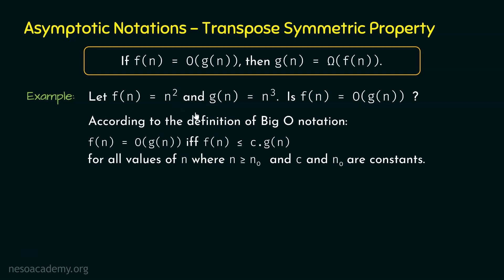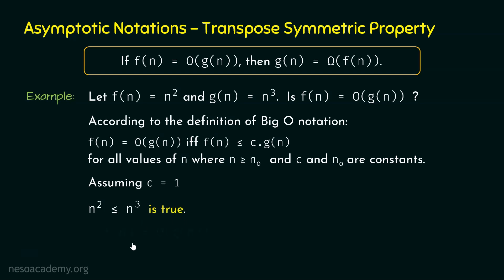F(n) is n² and G(n) is n³. Replacing F(n) by n² and G(n) by n³, and assuming C = 1, the inequality becomes n² ≤ n³. This is true for all values of n ≥ 1. Therefore, n² ≤ n³, the inequality is satisfied, and we can say F(n) is O(G(n)). The growth rate of n³ after some n₀ is greater than the growth rate of n², so clearly n³ is the upper bound of n². Hence, n² is O(n³).